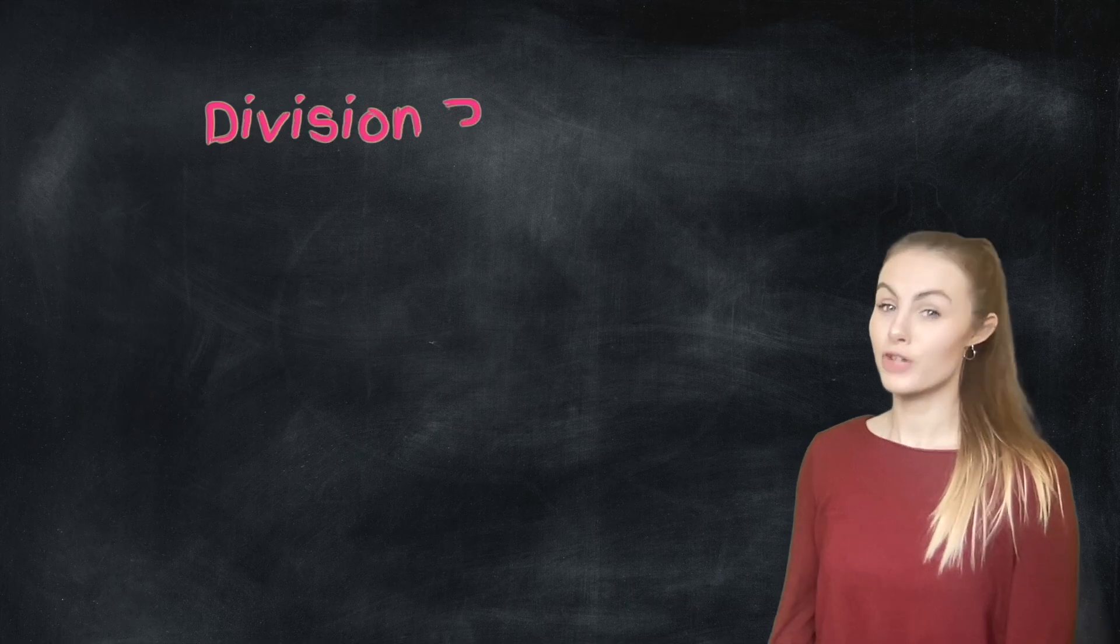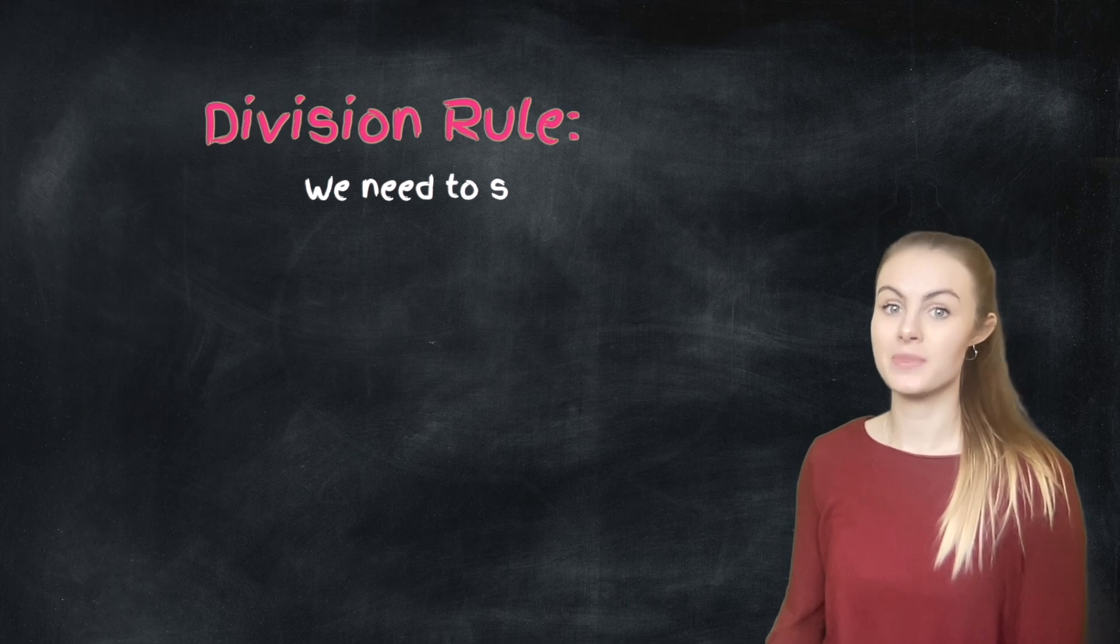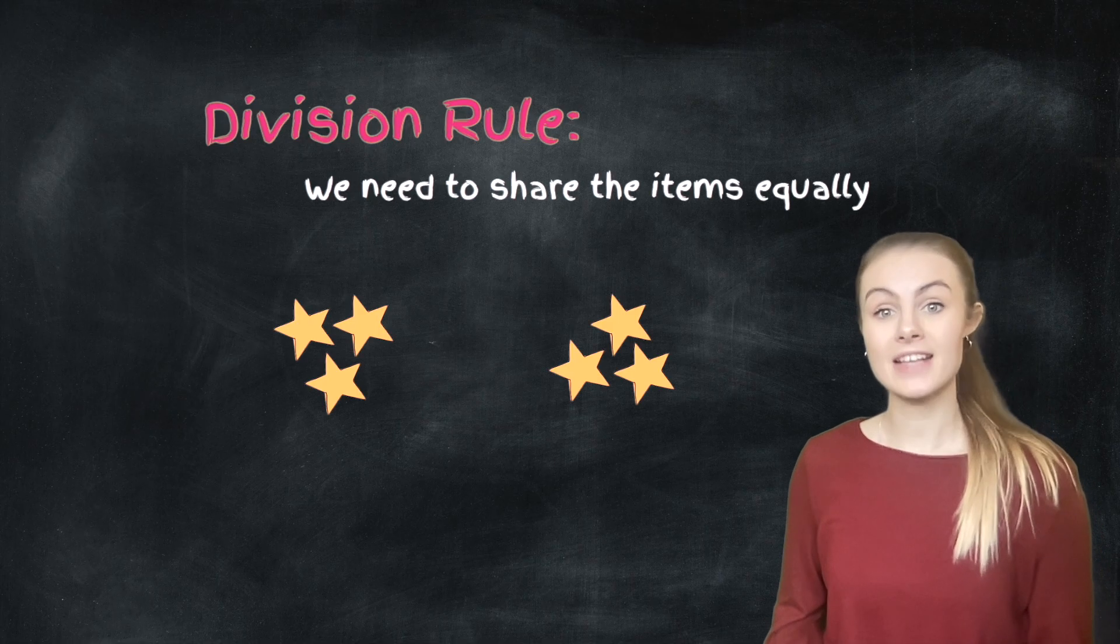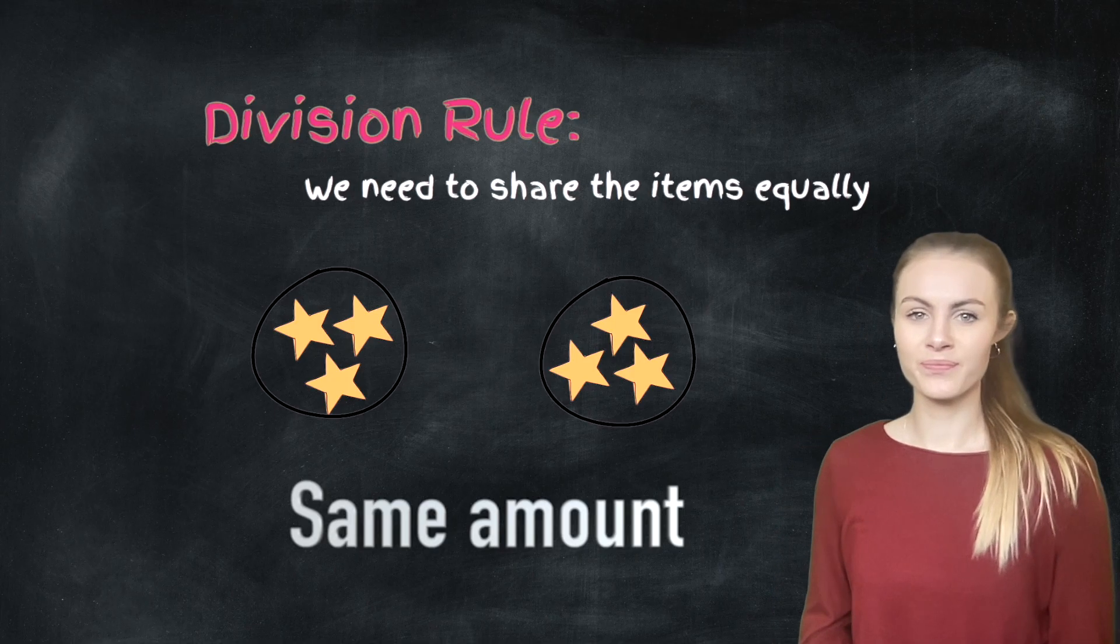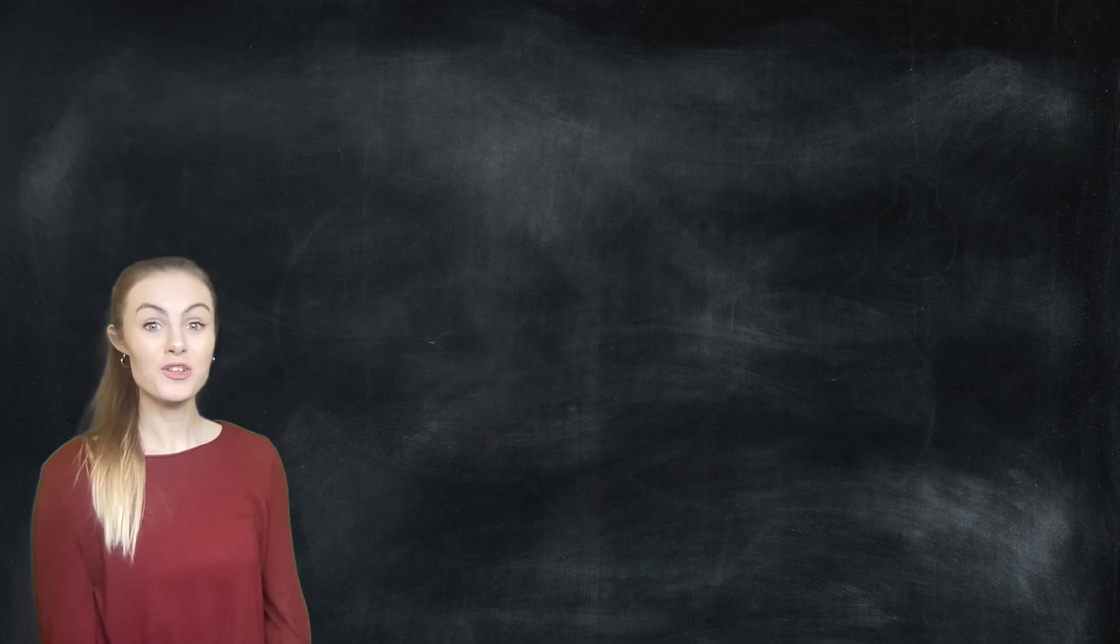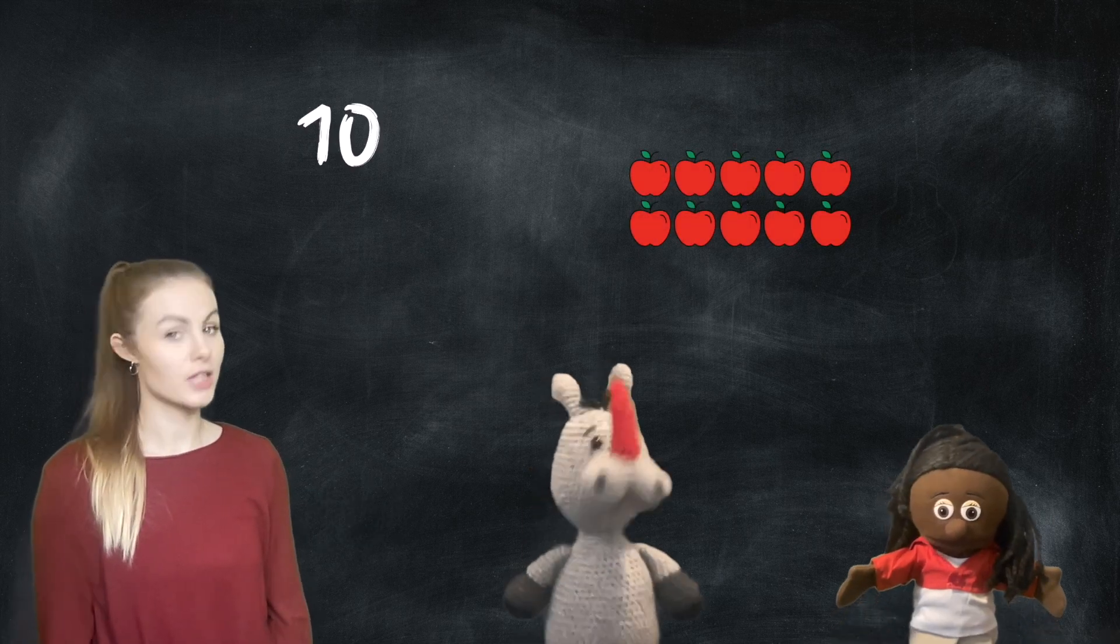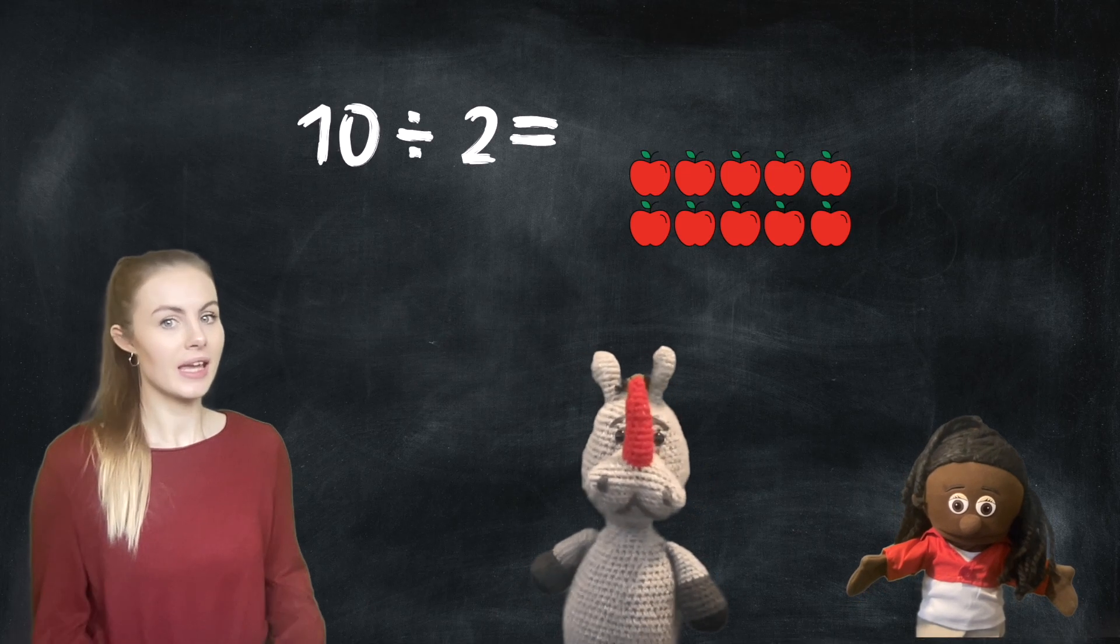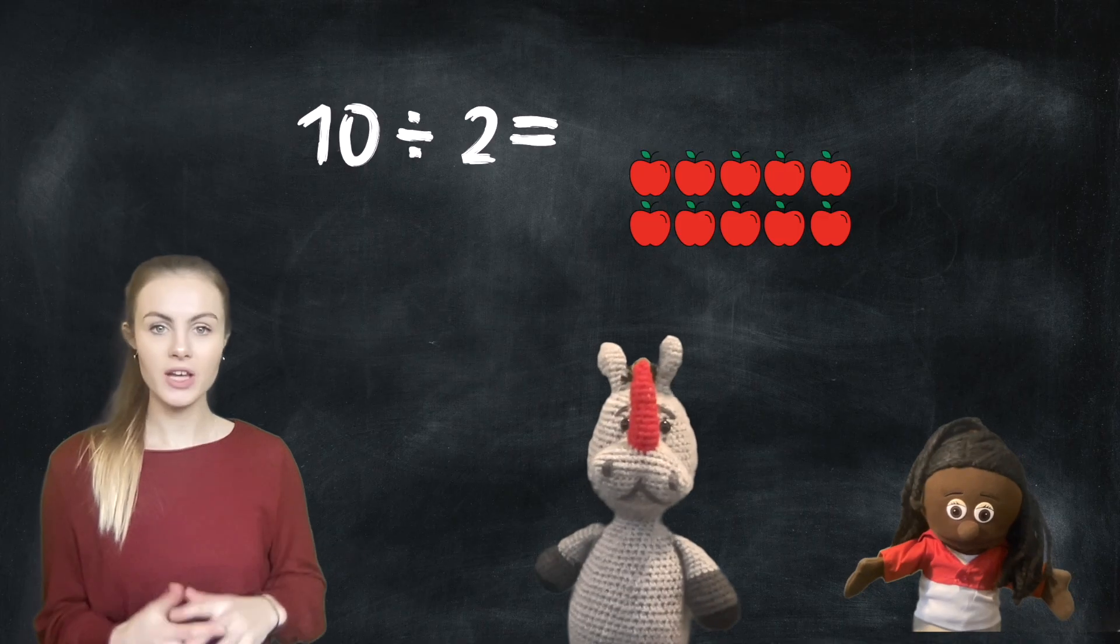So what's really important to remember when we're doing division is that we need to share the items equally. That means that each person or each group has the same amount. Let's look at another example together. I've got 10 apples and I'm going to share them equally between Roo and Pig. That's two people. So we can write this as 10 divided by 2 equals a question mark. And now this is what we don't know. So we need to work out the answer.